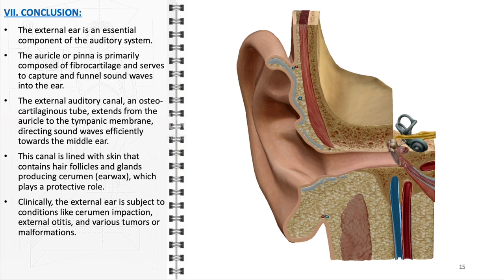Clinically, the external ear is susceptible to various conditions that can impact its functionality. Cerumen impaction, where excessive earwax accumulates and blocks the ear canal, can lead to symptoms like hearing loss and discomfort. External otitis, often referred to as swimmer's ear, is an infection that typically arises from prolonged exposure to moisture and can cause significant pain and inflammation. Additionally, the external ear can be affected by various tumours or malformations, ranging from benign growths to more serious congenital abnormalities, affecting both the function and appearance of the ear. The complexity and importance of the external ear in the auditory system are evident through its intricate structure, vital functions, and the range of clinical issues that can arise.